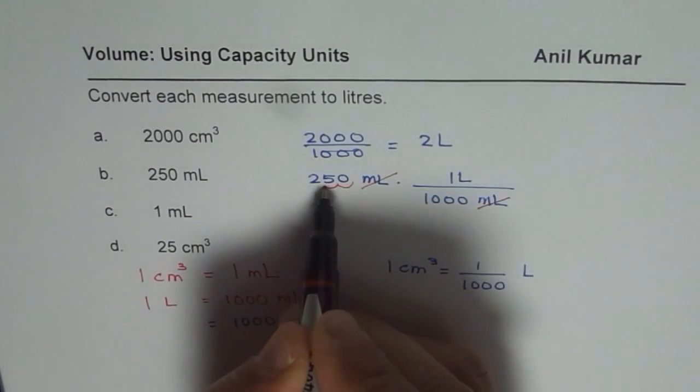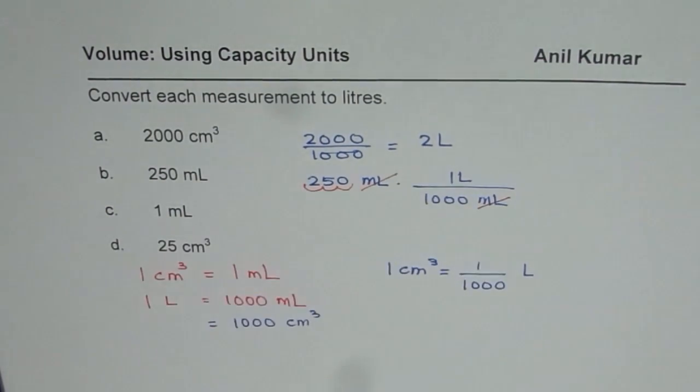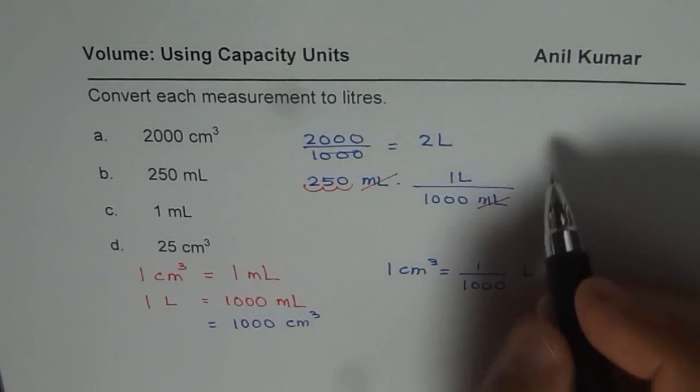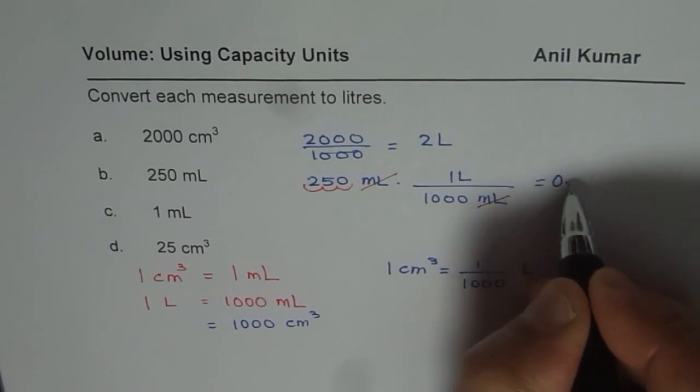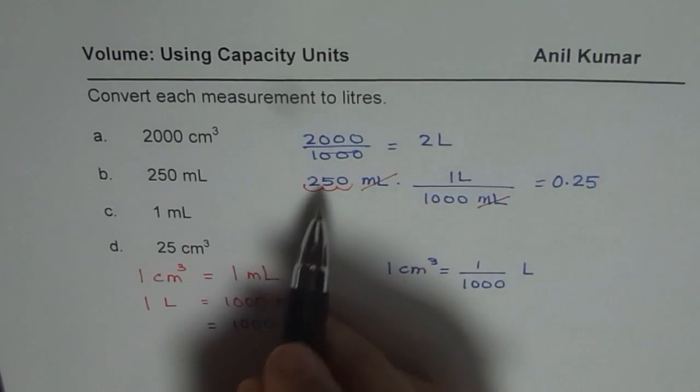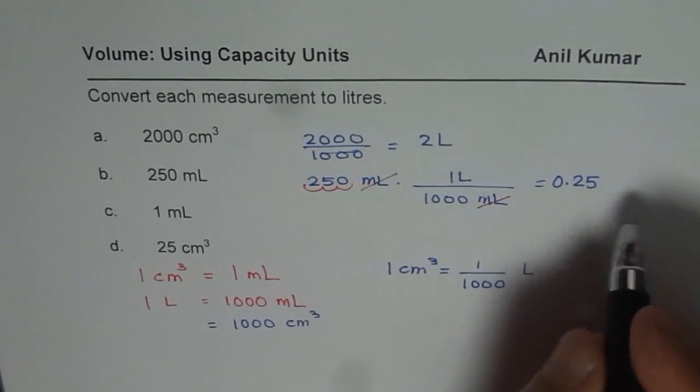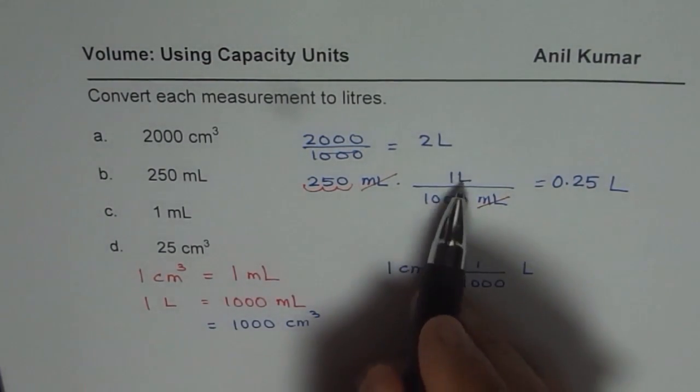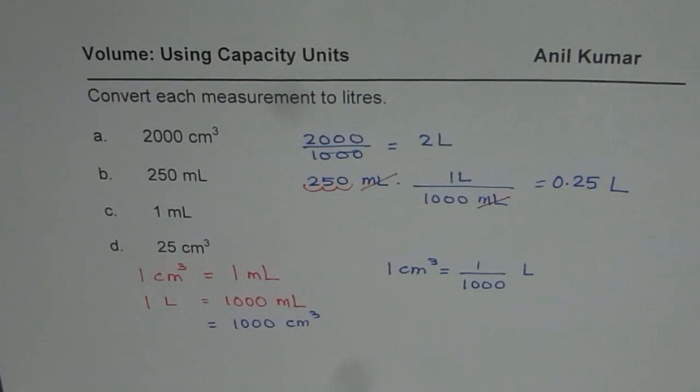When you do that, what do you get? You get 0.25 liters. Do you see that you're left with liters? So that is how you could convert the units. This is a very effective way of converting, so you could apply the method of direct division, write the units as we did or like this as you like.